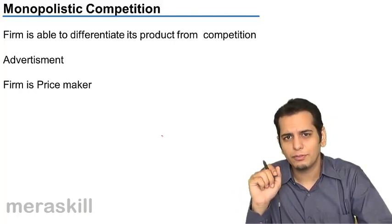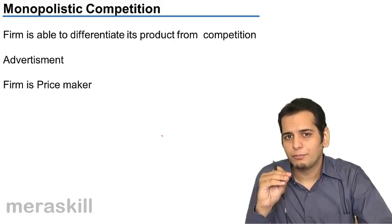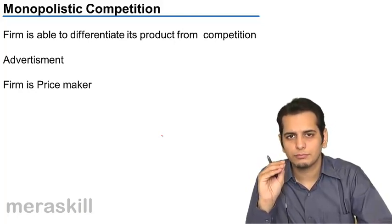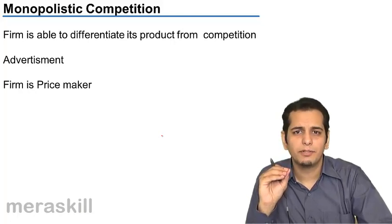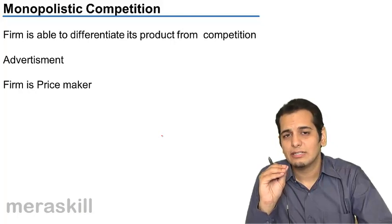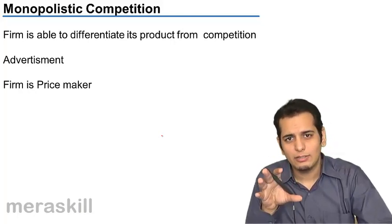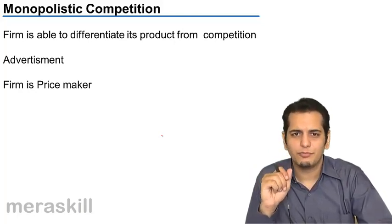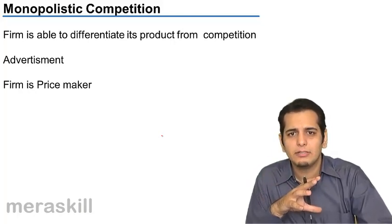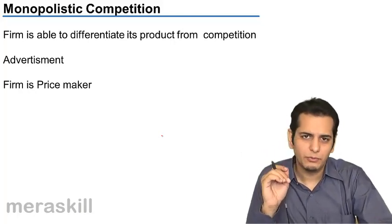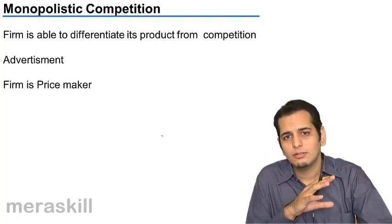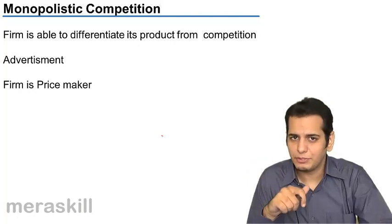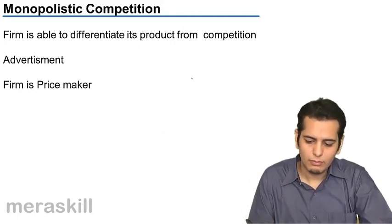The point where monopolistic competition differs from perfect competition is that in perfect competition the important feature is homogeneous goods, but in monopolistic competition the feature is differentiated goods. The goods are different from one another — the difference may not be very big, but the goods do differ from each other, even if only minutely. So here the goods are not identical or homogeneous.